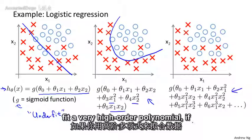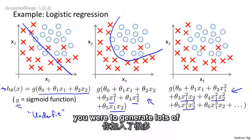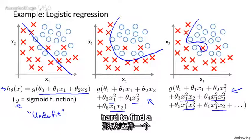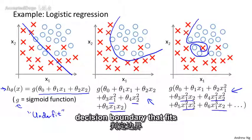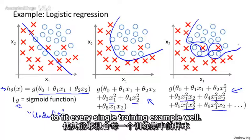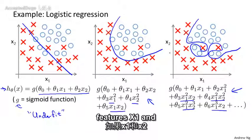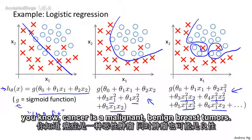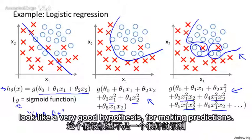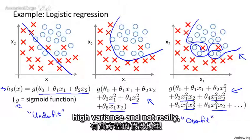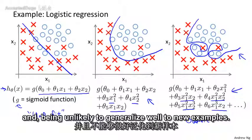And finally, at the other extreme, if you were to fit a very high-order polynomial, if you were to generate lots of high-order polynomial terms as features, then logistic regression may contort itself, may try really hard to find a decision boundary that fits your training data. Or go to great lengths to contort itself to fit every single training example well. And if the features X₁ and X₂ are for predicting maybe cancerous malignant benign breast tumors, this really doesn't look like a very good hypothesis for making predictions. And so, once again, this is an instance of overfitting and of a hypothesis having high variance and being unlikely to generalize well to new examples.